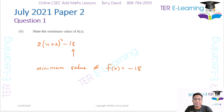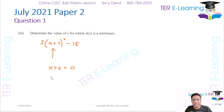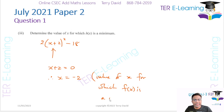The last part asks us to determine the value of x for which f of x is a minimum. We have 2(x plus 2) squared minus 18. To find the minimum, set the bracket equal to zero: x plus 2 equals 0, therefore x equals minus 2. That is the value of x for which f of x is a minimum. That takes care of Question 1 — hit subscribe and look out for Question 2.